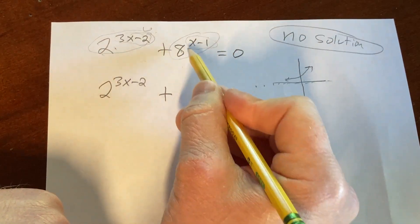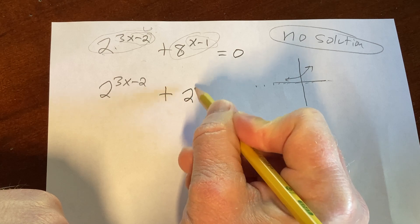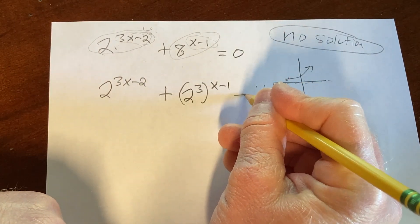Plus, and then this one here, what we can do is we can write the 8 as 2 cubed. This is 2 cubed to the x minus 1. Now all of this is equal to 0.